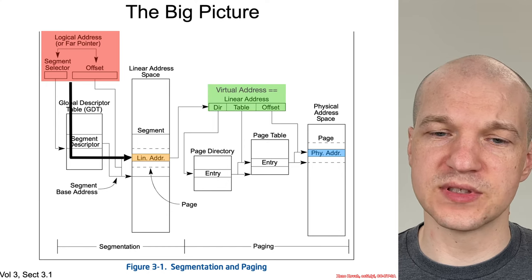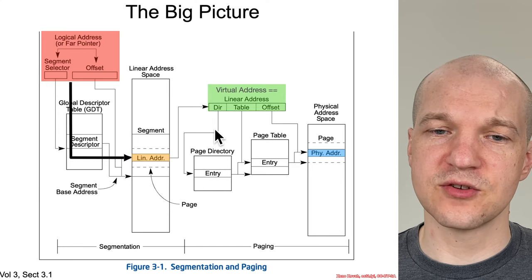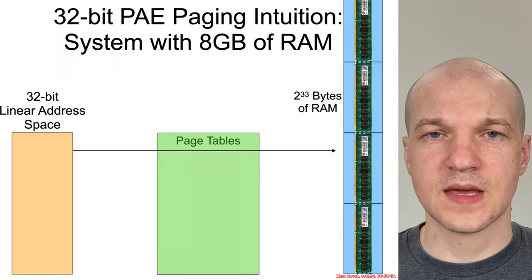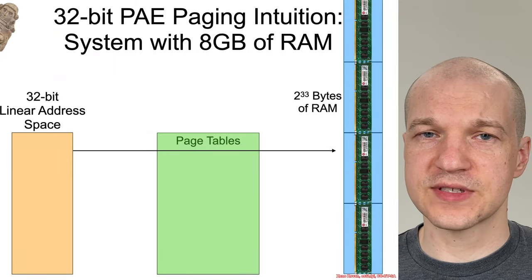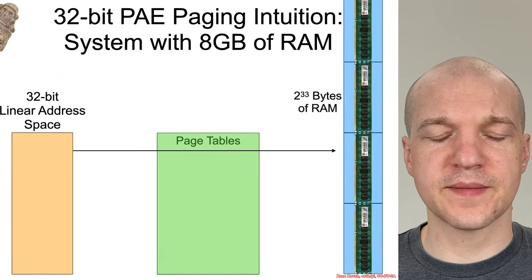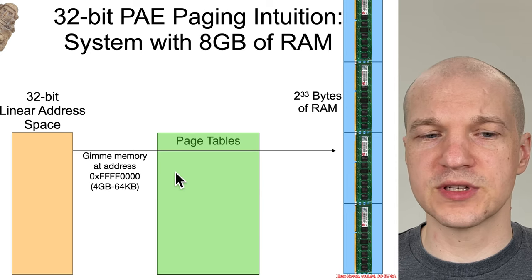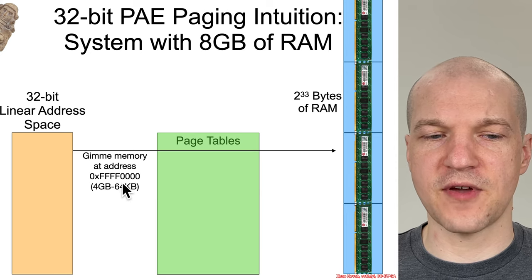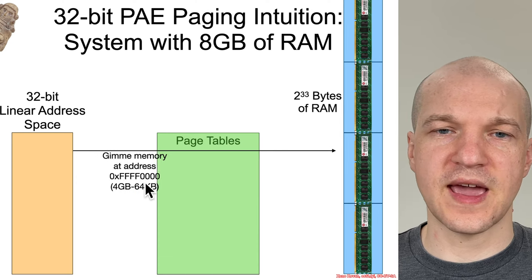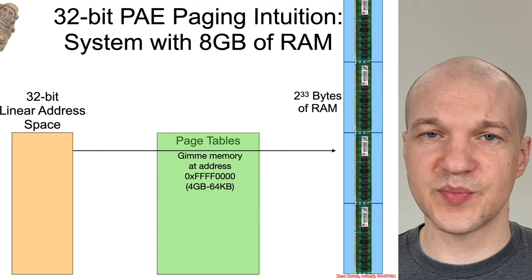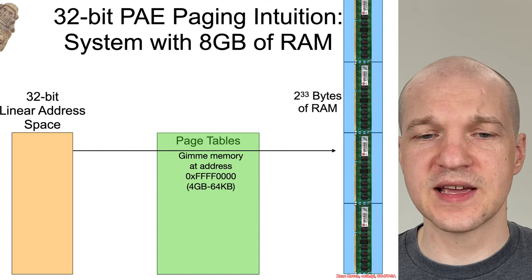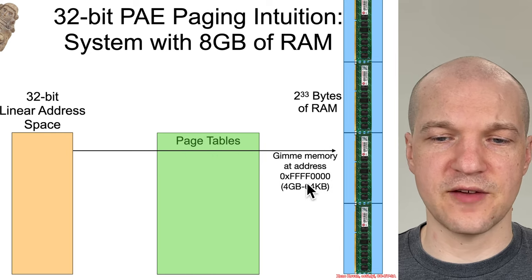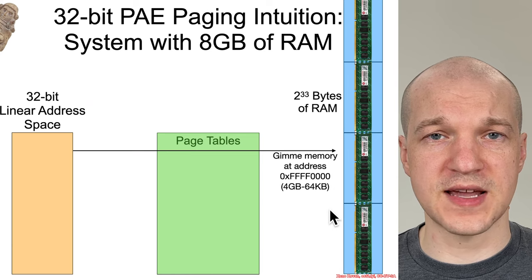We talked about how page tables meant that you could translate a particular linear address to a different physical address. In this description of how someone would access physical memory, someone could say give me linear address FFFF000, and it would translate through page tables. But let's say that it was identity mapped — we would expect this to access RAM at FFFF000.